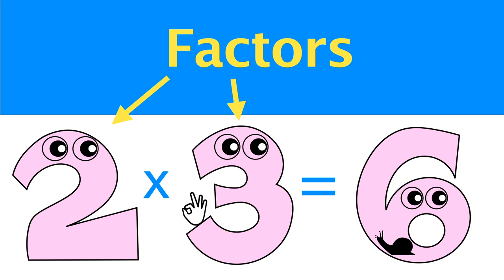Let's practice more. 2 times 3 equals 6, so 2 and 3 are the factors of 6. 2 divides 6 completely with no remainder, and 3 divides 6 completely with no remainder.